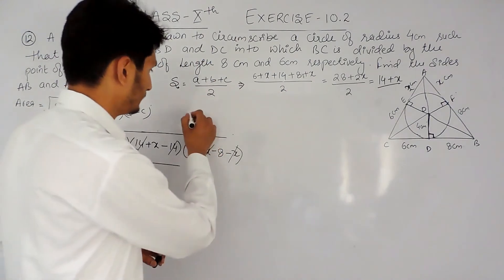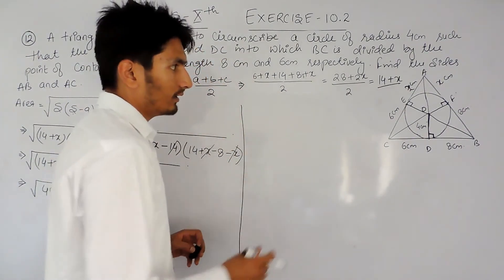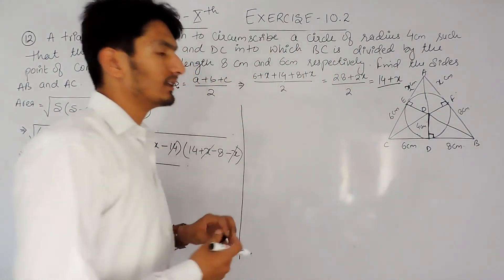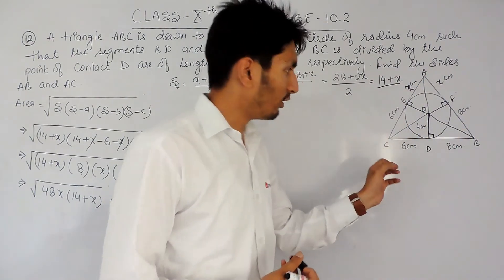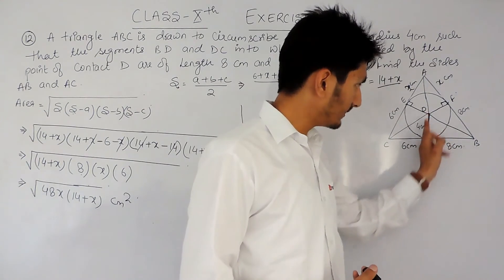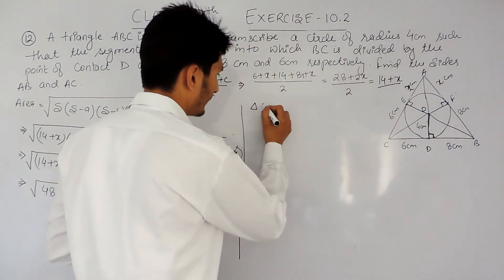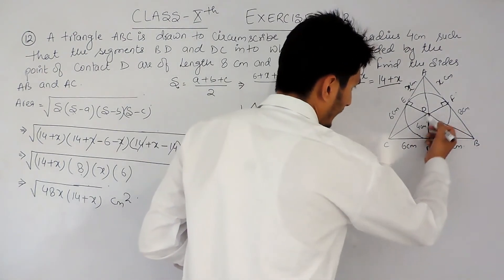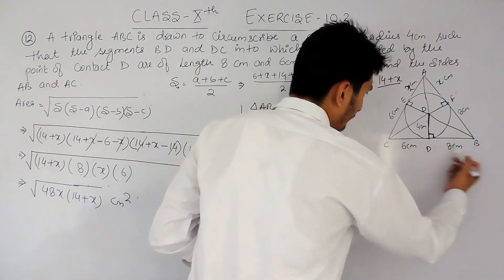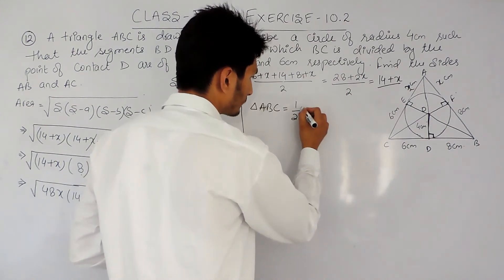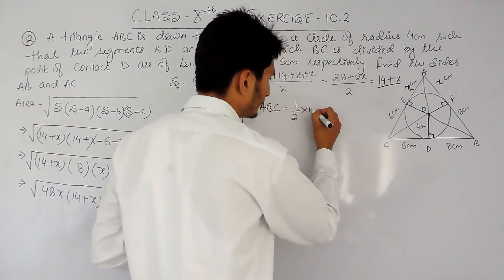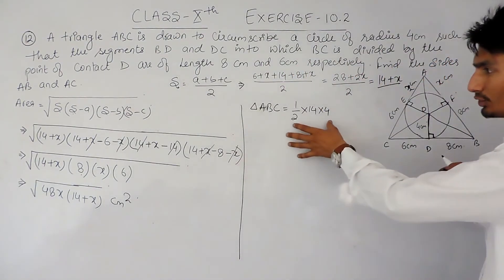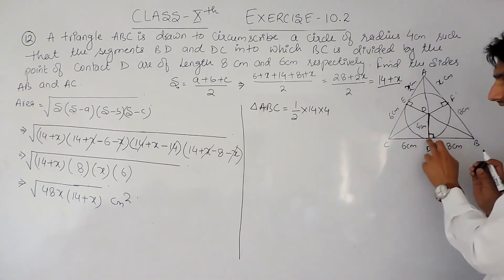Now for the second method, we find the area as the sum of three sub-triangles. The area of triangle ABC equals area of triangle OCB plus area of triangle OAC plus area of triangle OAB. For triangle OCB, using half × base × height: the base is BC = 14 cm and the height is the radius = 4 cm. So area of OCB = ½ × 14 × 4.